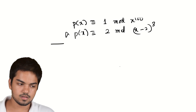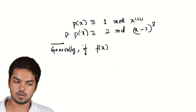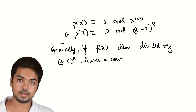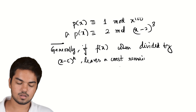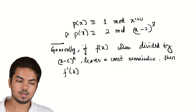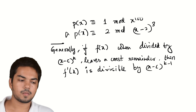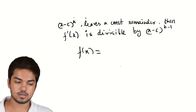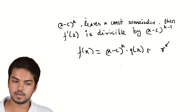There's a general result here: if f(x), when divided by (x−c)^k, leaves a constant remainder — meaning a remainder of degree 0, not a function of x — then the derivative f'(x) is divisible by (x−c)^(k−1). What are we saying? That if f(x) leaves a constant remainder r when divided by (x−c)^k, then f(x) = (x−c)^k · q(x) + r, where r is just a number.